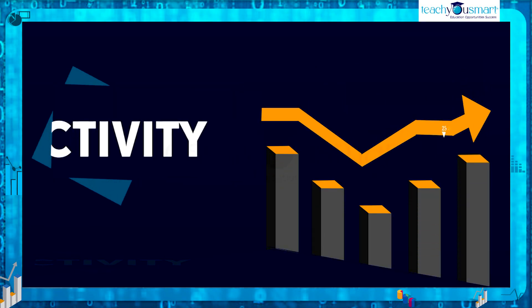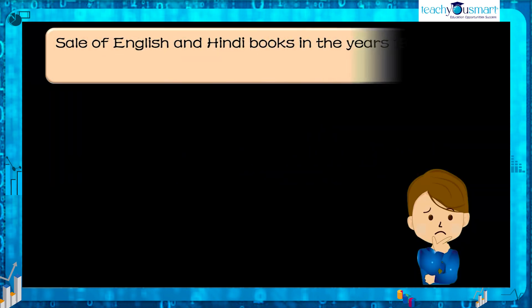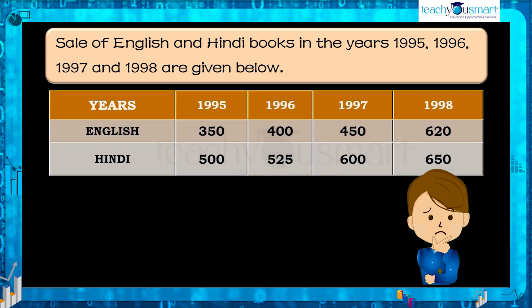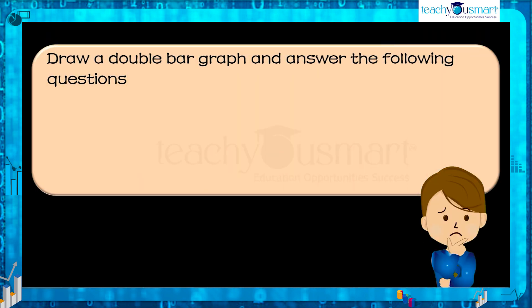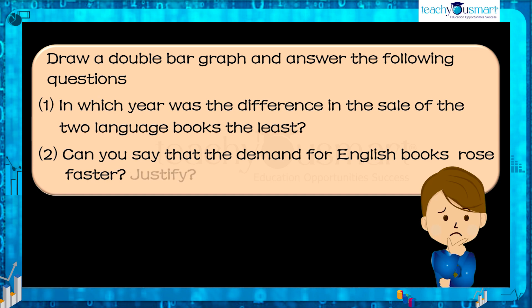Before winding up let's check how much you understood by doing an activity. Sale of English and Hindi books in the years 1995, 1996, 1997 and 1998 are given below. Draw a double bar graph and answer the following questions. One, in which year was the difference in the sale of the two language books the least? Two, can you say that the demand for English books rose faster? Justify.